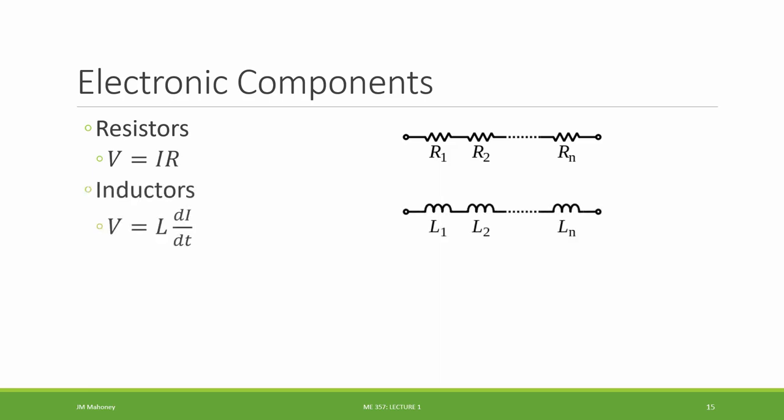Then we have inductors as another basic electronic component, which is going to have more of a squiggly representation here, or here they have it as these round surfaces. These are our inductors. So it has a different relationship between the voltage drop across the inductor and the current.